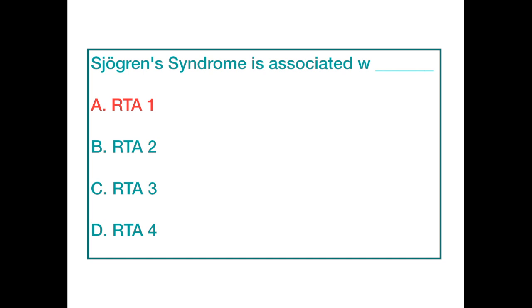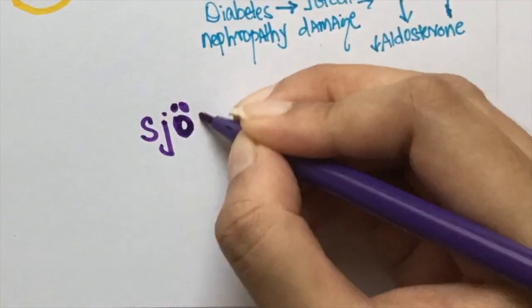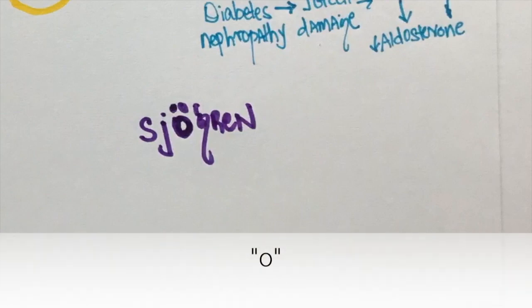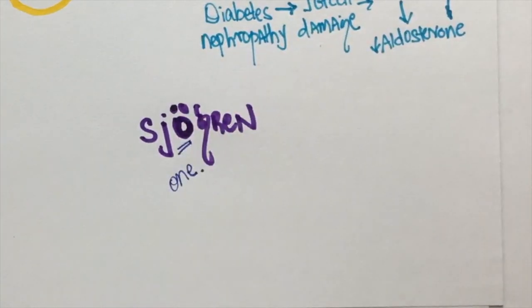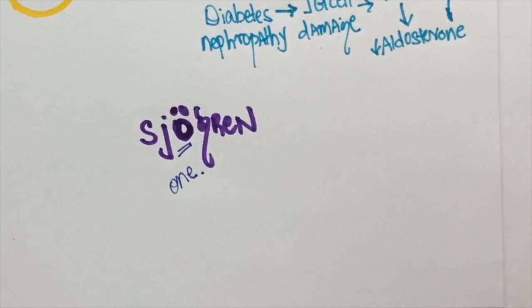The answer is renal tubular acidosis type 1. I remember this by the alphabet here. Since the O is pretty unique, it reminds me of 1. Also, it looks like two eyes and a mouth which reminds me that Sjögren's syndrome is associated with dry eyes and dry mouth.